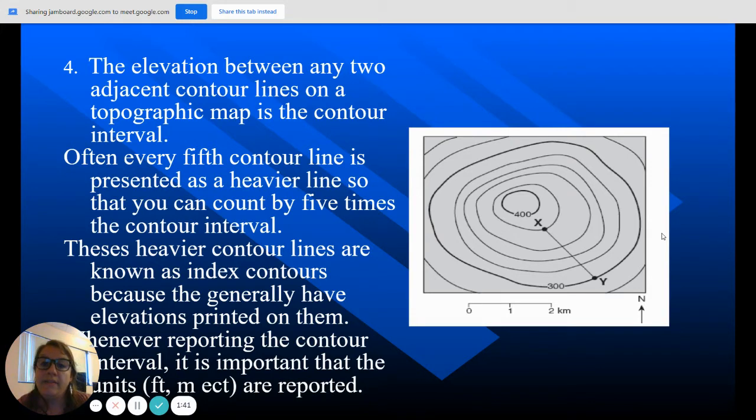So number four, the elevation between any two adjacent contour lines on a topographic map is the contour interval. So it's basically saying that whatever these lines are going up by, that's your contour interval. So let's figure this one out. I have 300 here, I have 400 here, and it's separated by 1, 2, 3, 4, 5 lines.